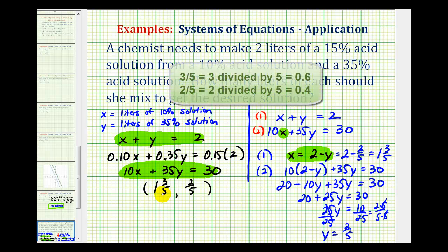We may want to convert these to decimals. 3/5 is the same as 0.6, so the mixture contains 1.6 liters of the 10% solution. And 2/5 as a decimal would be 0.4 liters of the 35% solution.